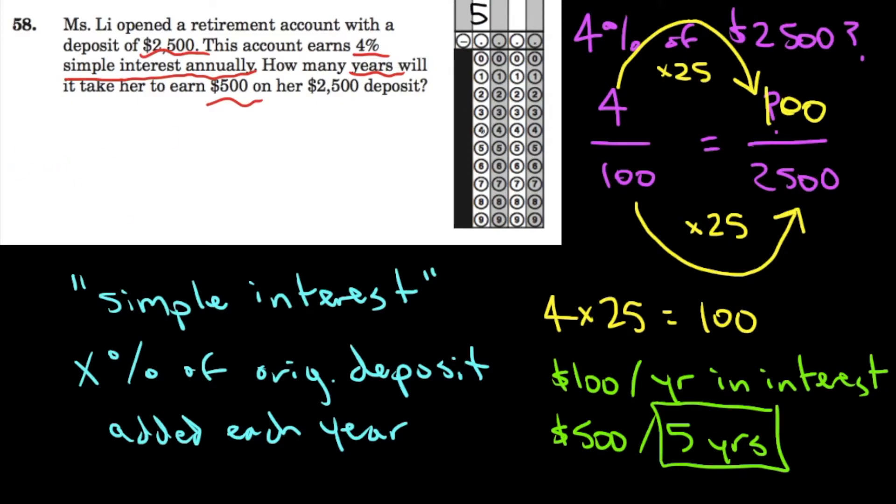We want to align it to the left, but we'll ignore the far left column because that's just for negatives. And we bubble it in like so.